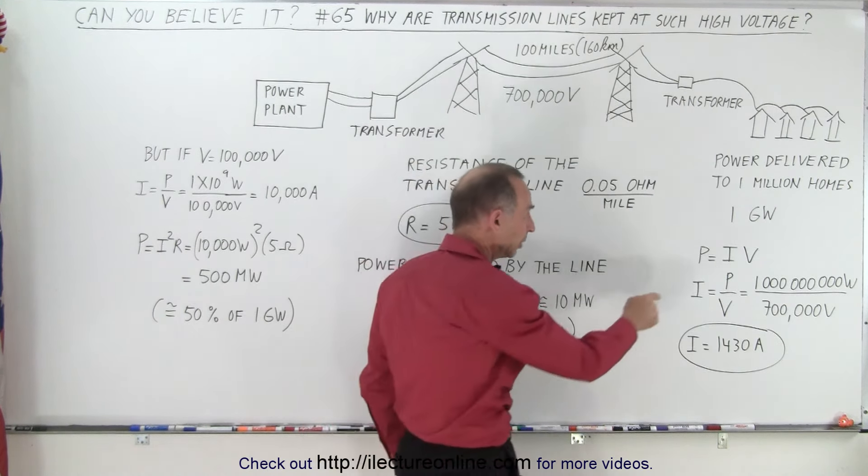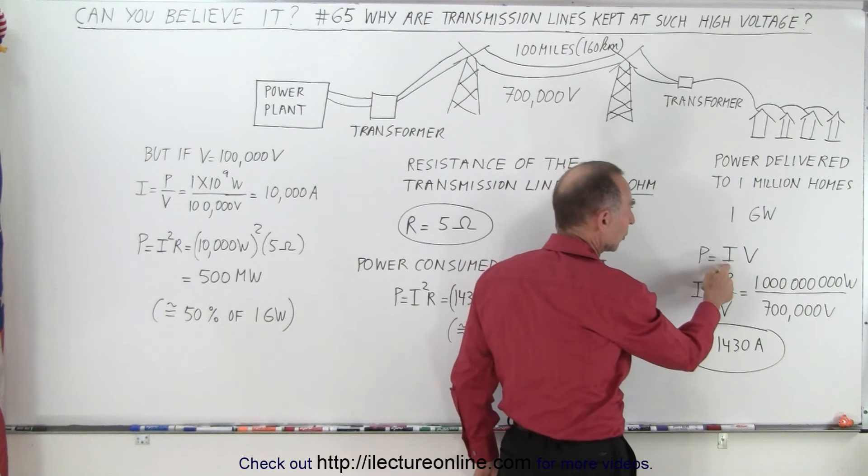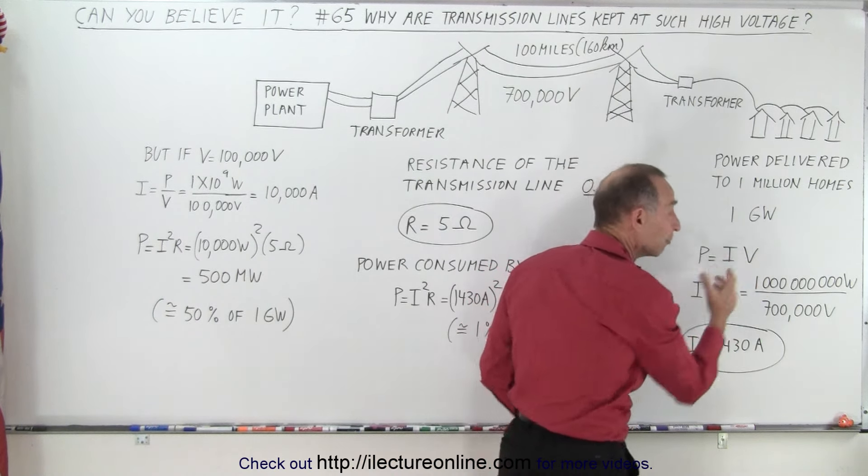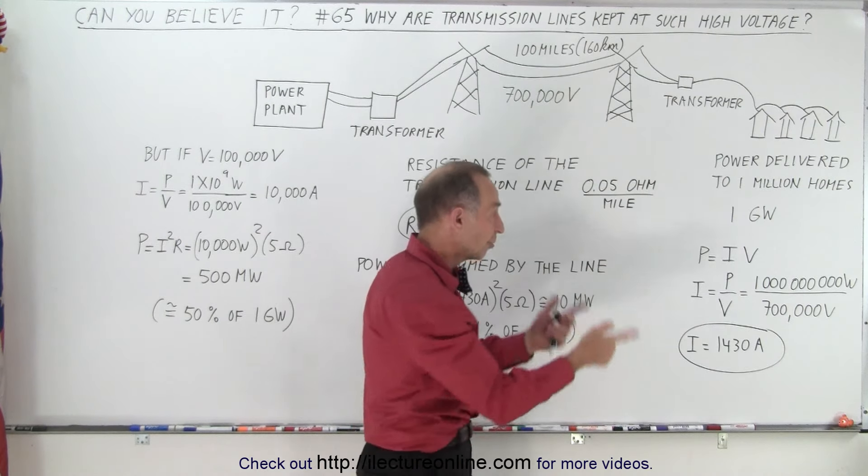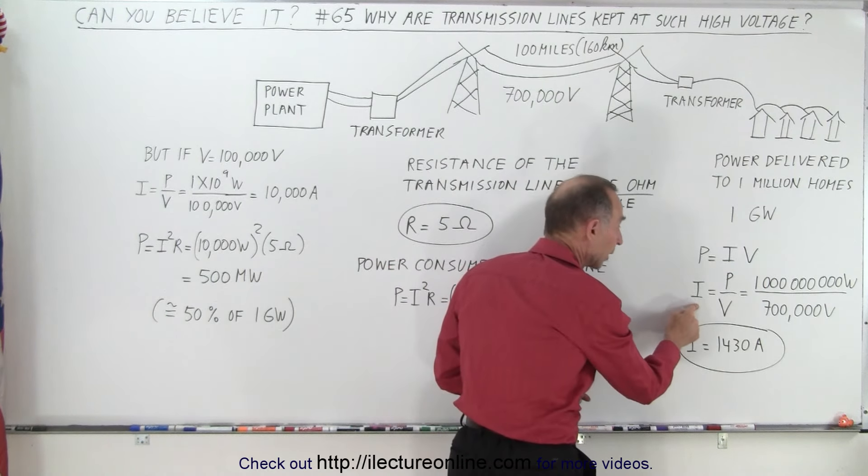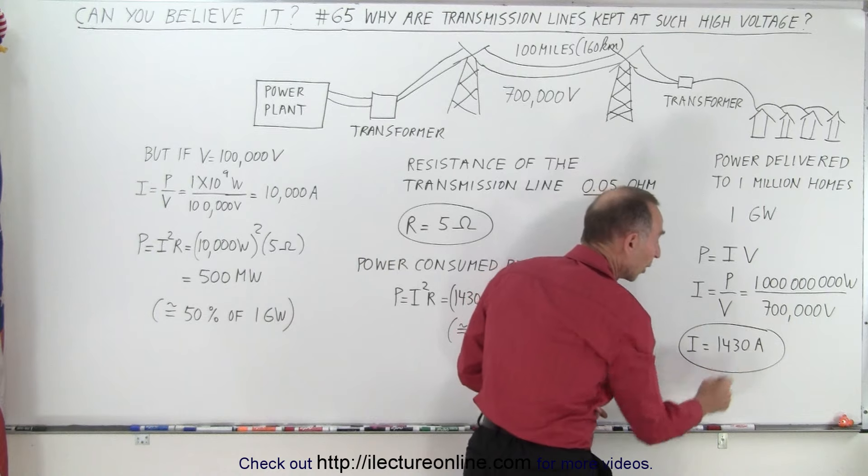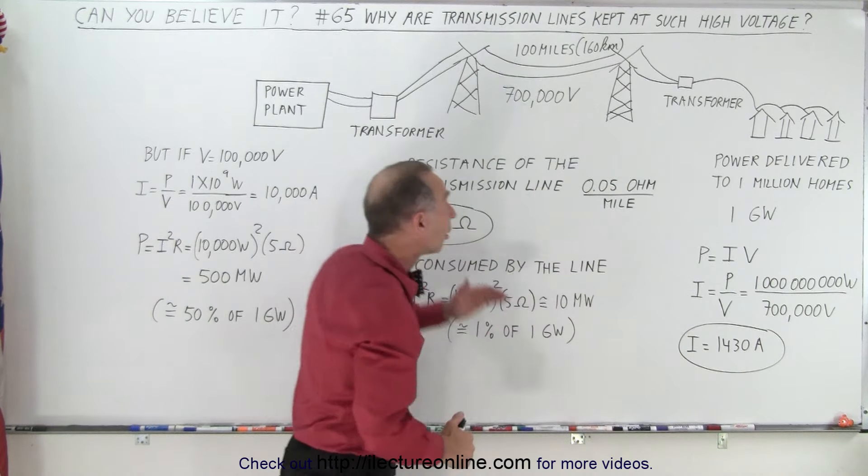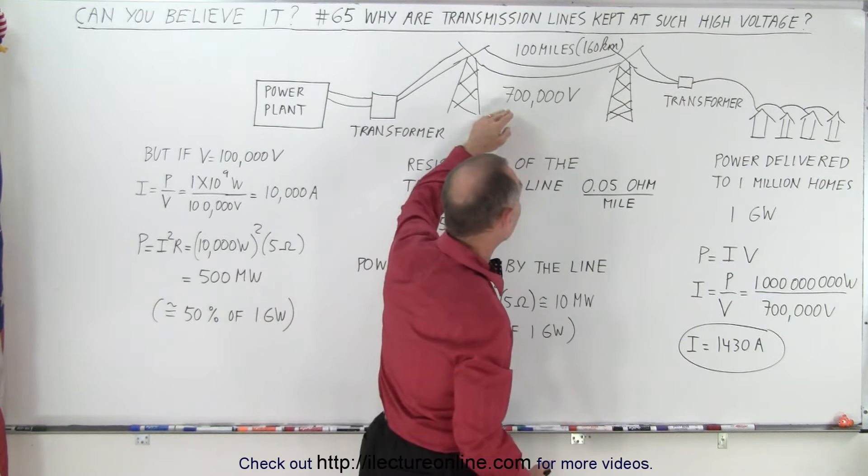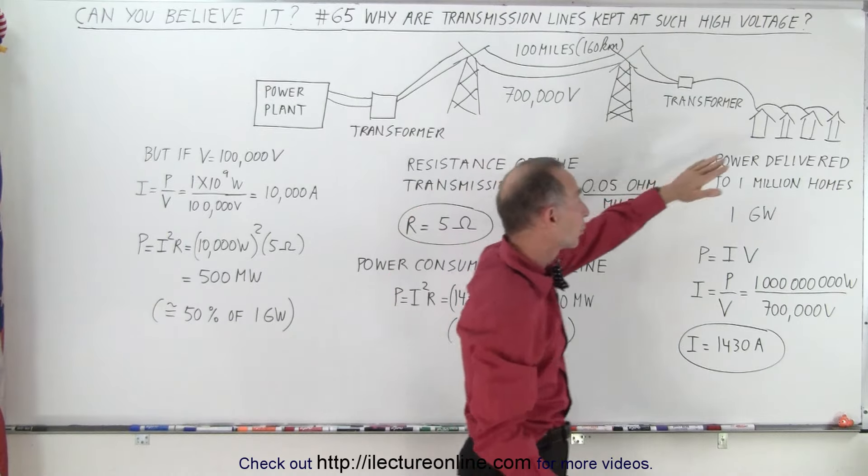And so the power provided is equal to the current required to get the power there times the voltage at which you do that. And from that we can calculate the current required. So in this case it requires 1,430 amps along that transmission line at 700,000 volts to provide that power to those homes.